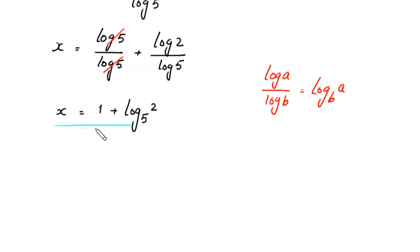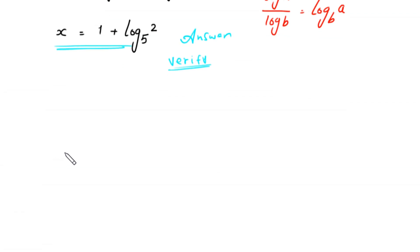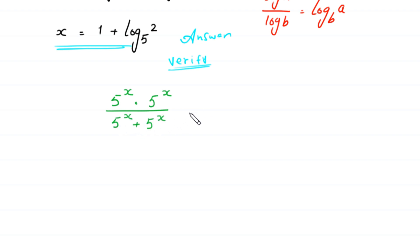This is the value of x — x equals 1 plus log base 5 of 2 — and this is the final answer to the equation. Now let's verify this value of x by substituting it into the original equation. The original equation is 5 to the power x times 5 to the power x, divided by 5 to the power x plus 5 to the power x, equal to 5. We put x equals 1 plus log base 5 of 2.